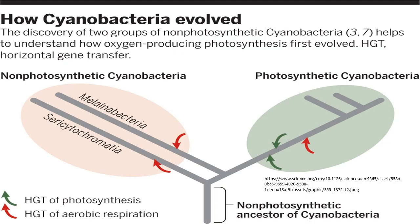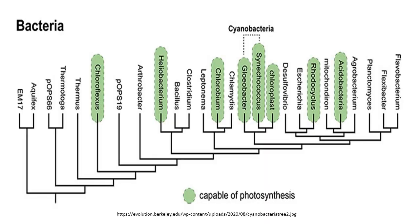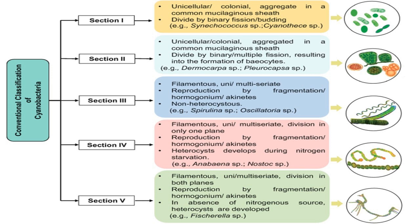They appear to have originated in a freshwater or terrestrial environment. Cericytochromatia, the proposed name for the paraphyletic and most basal group, is the ancestor of both the non-photosynthetic group and the photosynthetic cyanobacteria. The non-photosynthetic group is called melaninobacteria and the photosynthetic cyanobacteria are called oxophotobacteria.